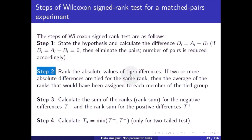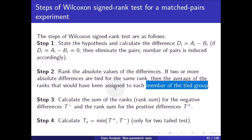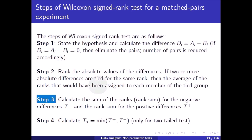Step 2: Rank the absolute values of the differences. If two or more absolute differences are tied for the same rank, assign the average of the ranks that would have been assigned to each member of the tied group. Step 3: Calculate the sum of the ranks for the negative differences T minus and the sum of the ranks for the positive differences T plus.